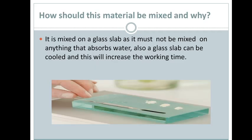How should this material be mixed and why? The cement is mixed on a glass slab, as it must not be mixed on anything that absorbs water. A glass slab can also be cooled, which will increase the working time. We put the powder in three increments and this is the liquid. Then we use a small spatula to mix the powder with the liquid — not too fast, because cement dries up very quickly.